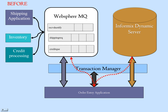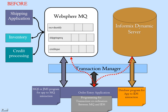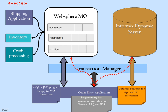This order entry application has to manage three separate connections — one to the Informix Dynamics Server, another to MQ. And to manage the information exchange between these two modules, it has to use a separate transaction manager to guarantee reliability. That also means it has three different programming paradigms and three different programming APIs. One is for database connection, where it's mostly SQL oriented.